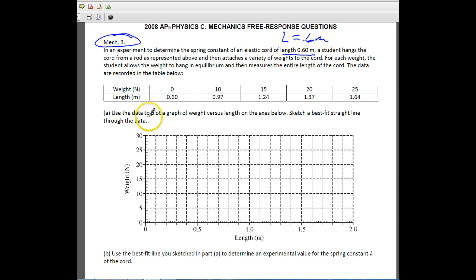So the first thing that we need to do is use the data to plot a graph of weight versus length, and then sketch a best fit line. So this should be relatively simple to do. It's a good way to get two really easy points. You get one point for plotting all the points correctly, or at least four of them is what it says. The next point would be about right here, so that would be 10 at about 0.97. The next point should be somewhere in this area because it is 15 and it's about 1.24. Next one would be 20 at 1.37.